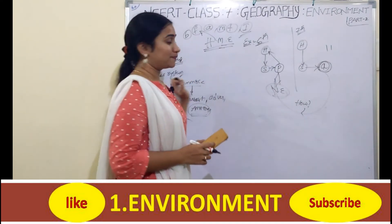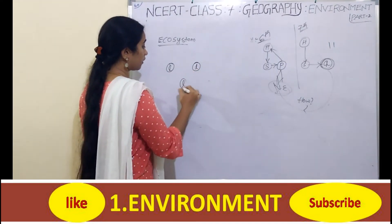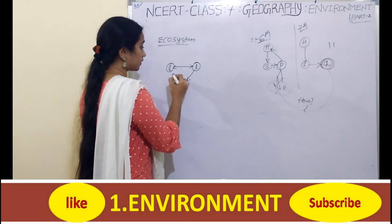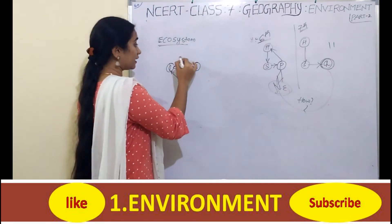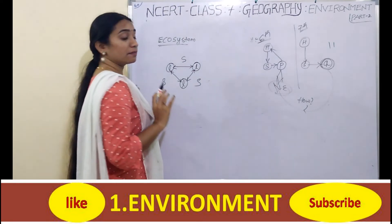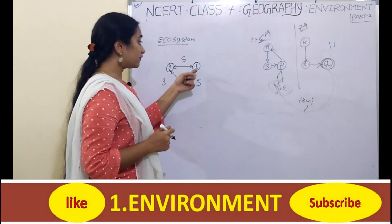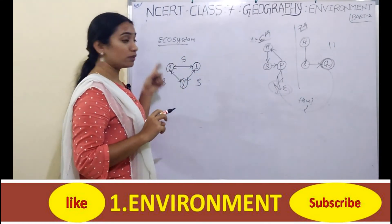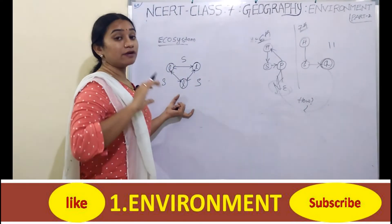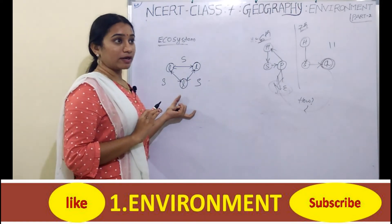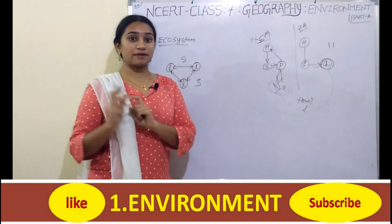Then moving on to the ecosystem. Ecosystem is nothing but the interaction of all living organisms with each other and with their immediate surroundings. We call it an ecosystem. So plants, animals, and human beings related with each other and with their surroundings - that forms an ecosystem.